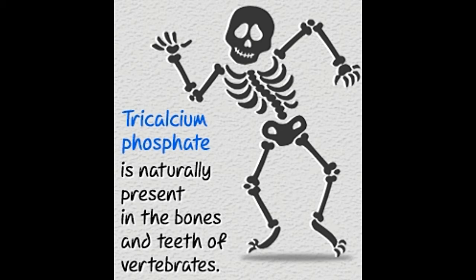This naturally occurring form is not pure, and can contain up to 40% phosphorus pentoxide by weight. It is a naturally occurring chemical found in the bones and teeth of all vertebrates. As a result, it is a primary product of the combustion of bones.